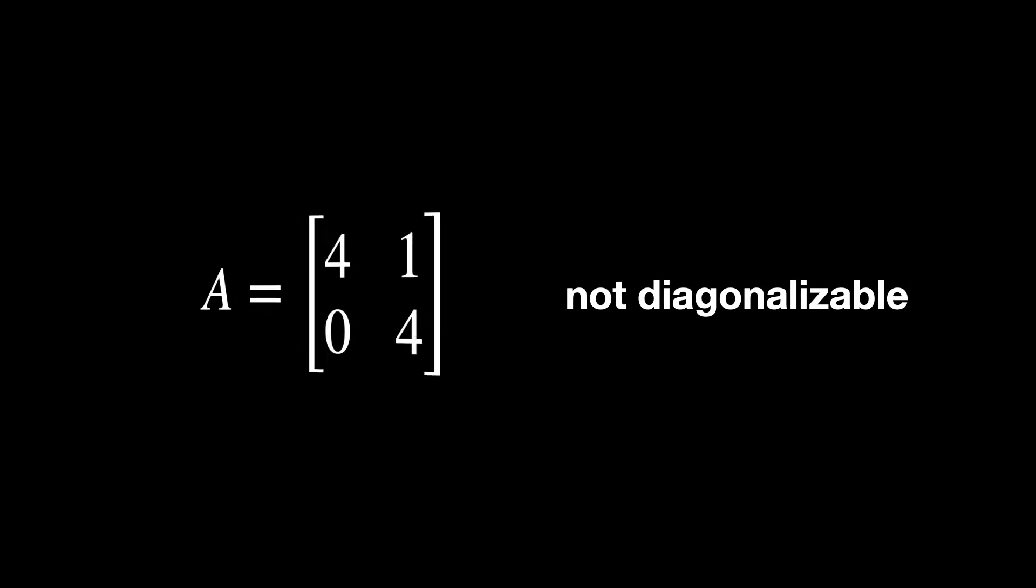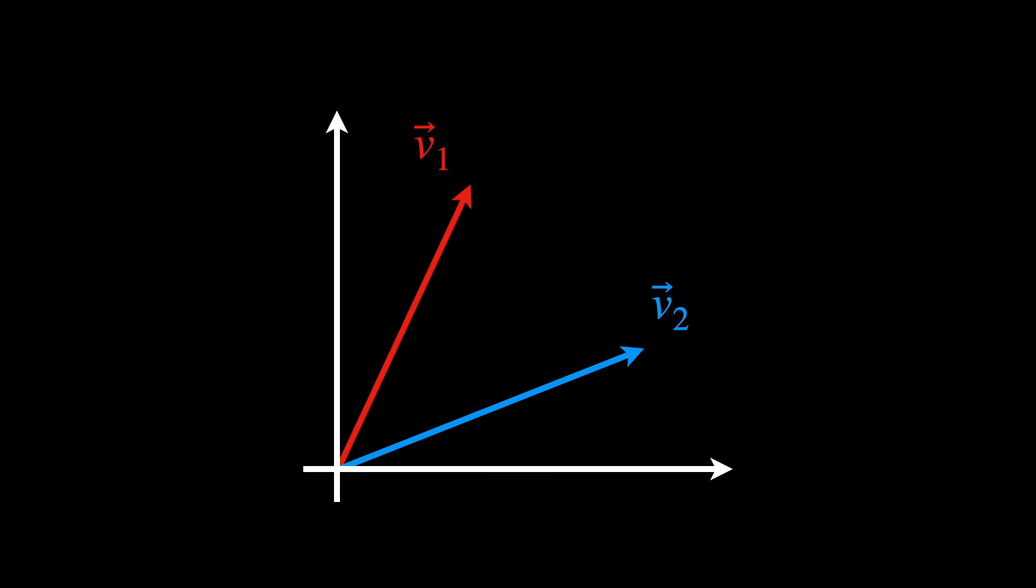Therefore, for all practical purposes, these two eigenvectors are the same. This kind of matrix is also called a defective matrix.